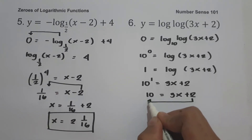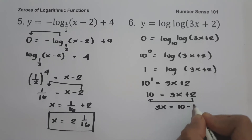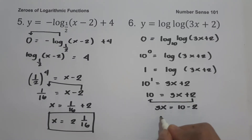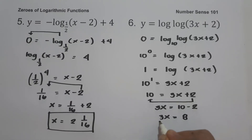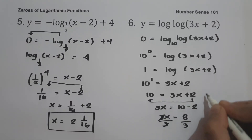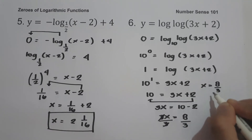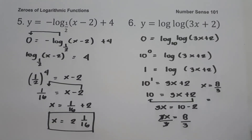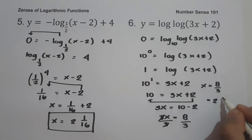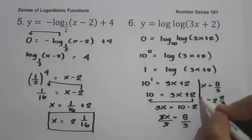Moving 2 to the other side: 3x equals 10 minus 2, which is 8. Dividing both sides by 3, we get x equals 8/3. Writing this as a mixed number, x equals 2 and 2/3. That is our answer.